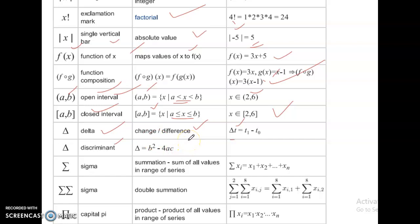Sigma. Summation. Sum of all values in the range of series. Summation Xi equal to X1 plus X2 plus up to plus Xn.